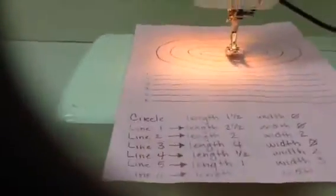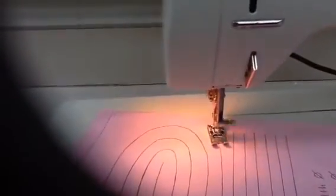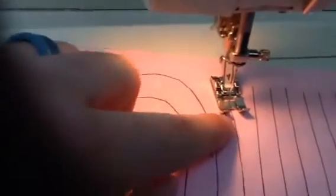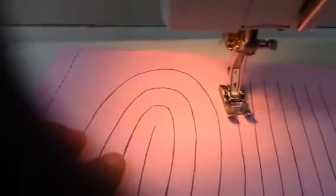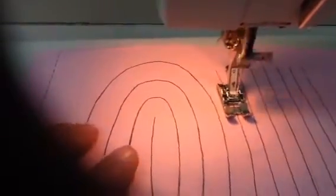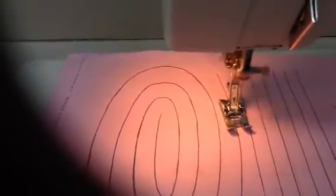If I do the circular ones, I'm going to set my length at one and a half, my width at zero for the circle, and I'm going to simply follow my line again. With this one, you may have to go a little slower, and I would suggest watching this oval right here where the needle is actually sticking into the paper, versus watching the front of your presser foot where the line is. Just concentrating on watching the needle go into the paper right there.